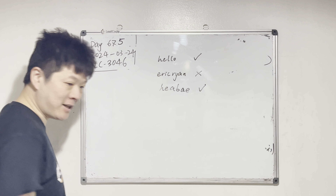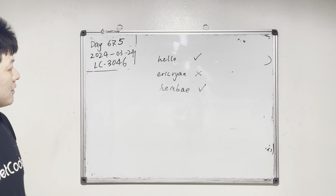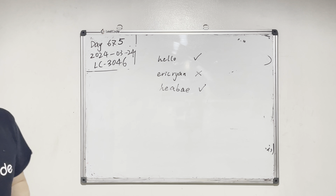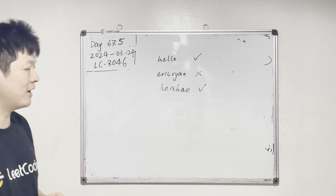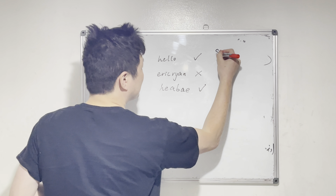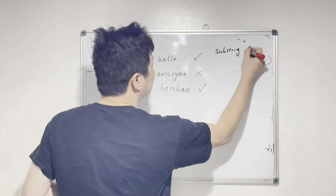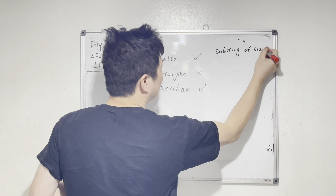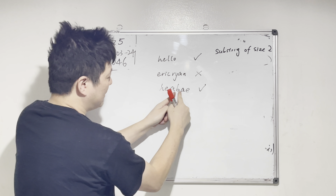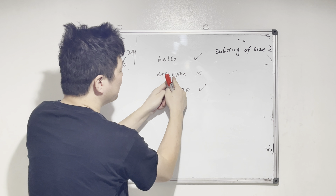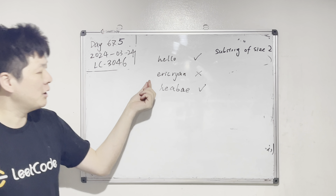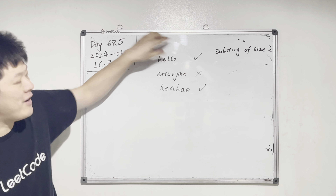Hello, Mr. Erie. Are you alright? Yeah. Okay, good. So we've given a string with all lowercase characters, and we want to find out a substring of size 2 — a continuous substring, basically a window of 2. We want to find out if there's any substring of size 2 that also appears in the reverse of it.